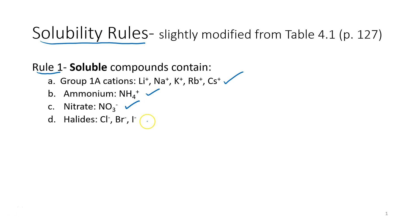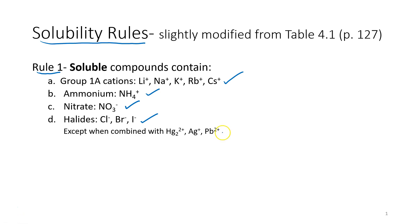Halides are also soluble, but there's an exception for halides. When your halide is combined with one of these cations — mercury 1, silver, or lead 2 — then the salt would be insoluble.